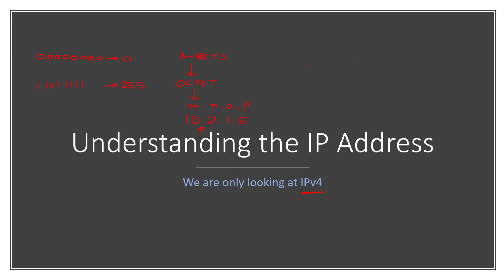Theoretically, the smallest IP address that can exist is 0.0.0.0, and the biggest IP address that can exist is 255.255.255.255. These are theoretical IP addresses — they do not exist in the actual world. They have specific and special meaning when working with actual virtual networks, but theoretically, this is the lowest and the largest IP address possible.